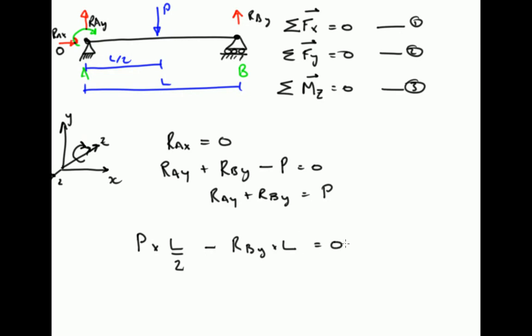And we have said that the sum of all those moments has to equal 0 to satisfy our equation of static equilibrium. If we rearrange that, we can see that PL divided by 2 equals R_By times L. We've just added R_By times L to both sides. And then if we divide both sides by L, these L's all cancel so that we get R_By equals P divided by 2.